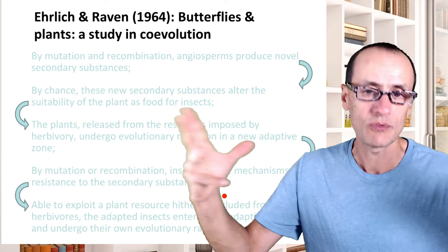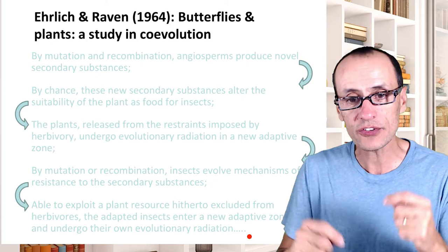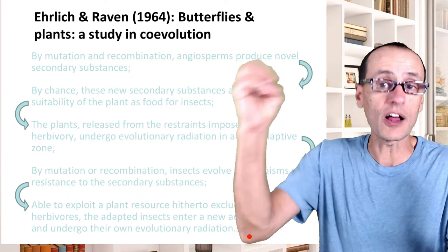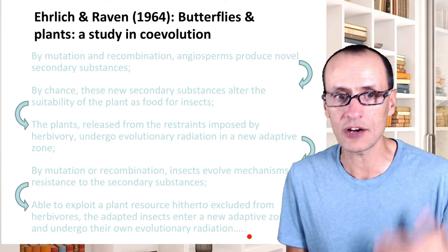They enter these new adaptive zones. It's this reciprocal evolutionary adaptive change that plants and insects can have on each other that allows them to escape herbivory and then diversify, colonize new plants, diversify in the absence of competitors, and so on. This is the so-called escape-and-radiate model of co-evolution that Ehrlich and Raven proposed.